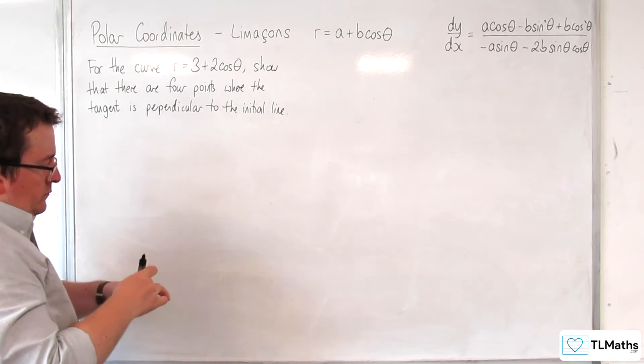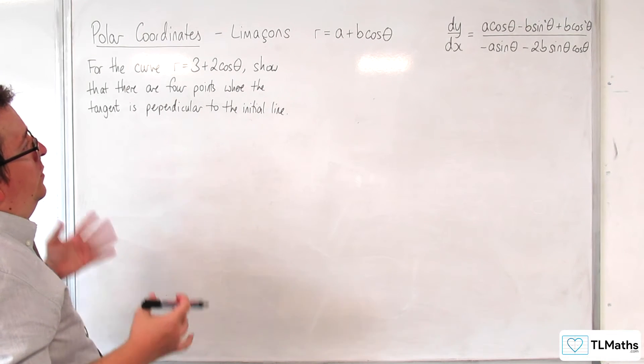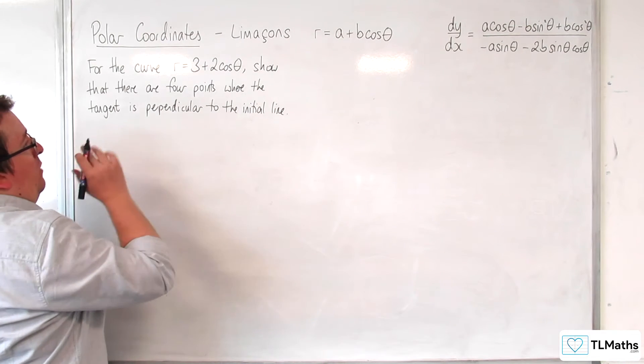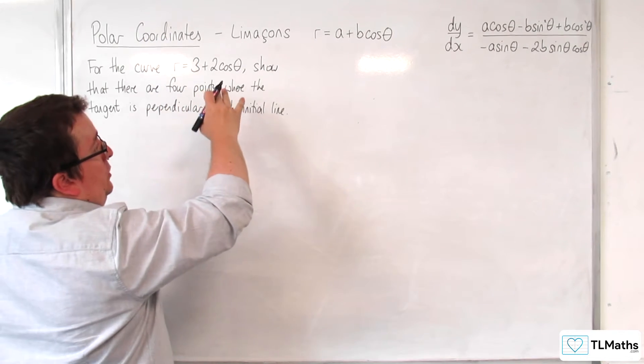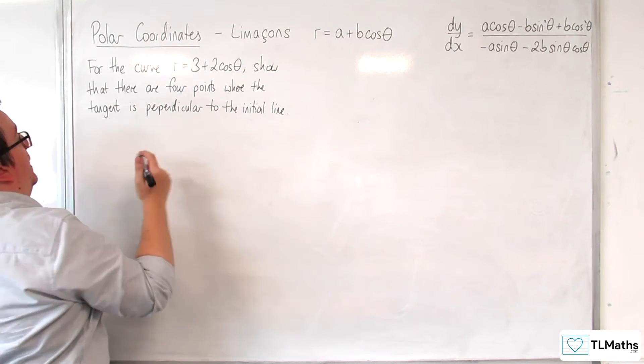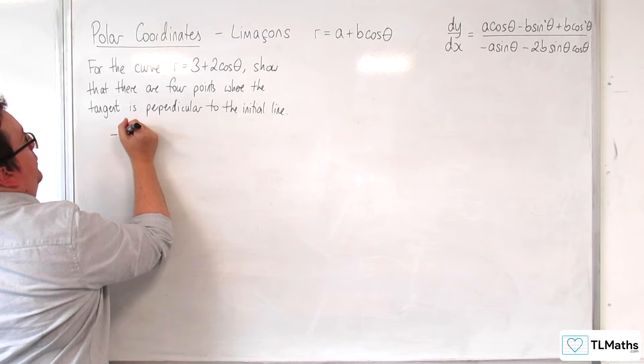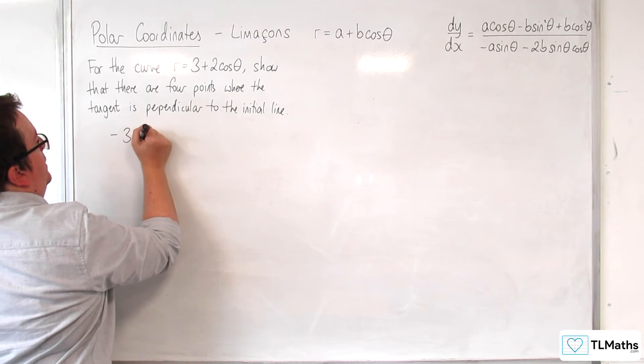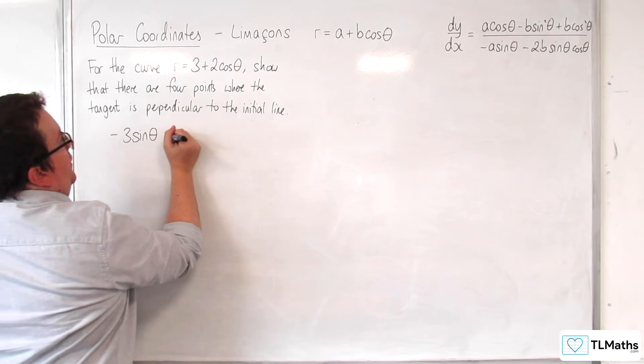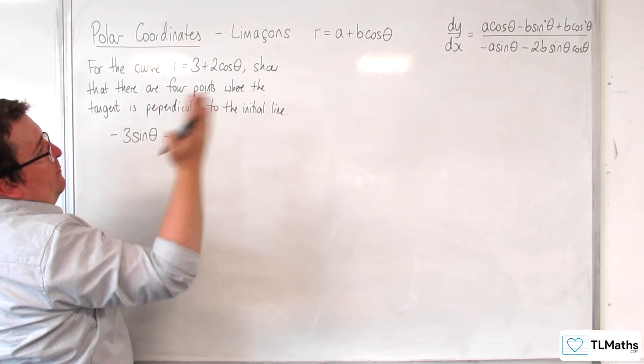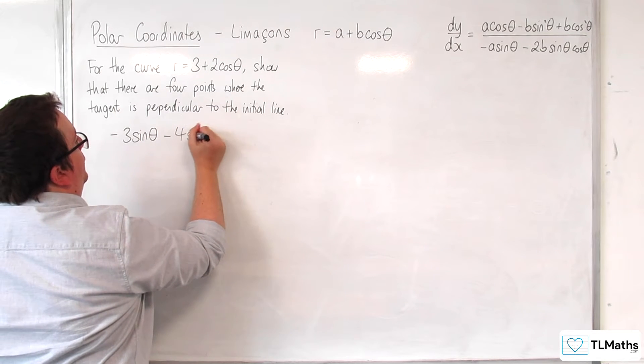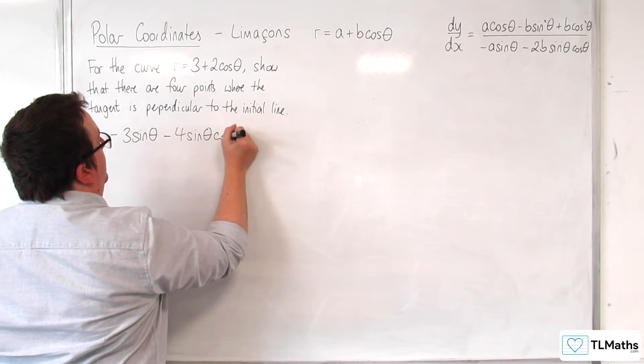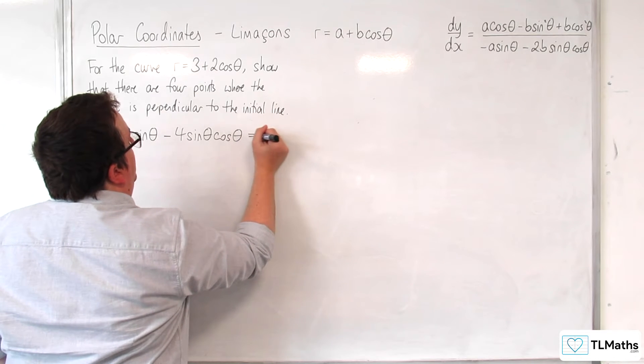So first of all, what we're going to say to ourselves is, well, a is 3, b is 2. I'm going to substitute it into the denominator. So we're going to have minus 3 sine theta take away 4 sine theta cosine theta, and that's going to be equal to 0.